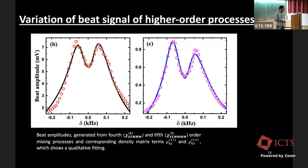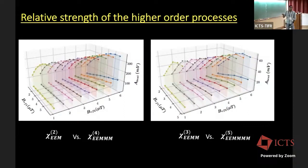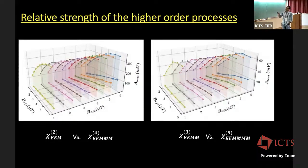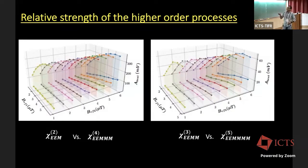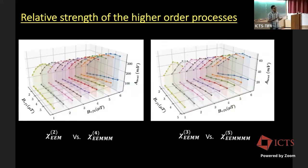The important thing we looked at was the relative strength of these processes. We varied the strength of BRF1 and BRF2 and compared chi-4 to chi-2. At about 5 microtesla in both fields, they become nearly the same order — about 300 versus 100, roughly three times less. But below about 1 microtesla, the higher-order process is much smaller — less than a percent. Similar behavior was observed for chi-3 and chi-5. This let us demonstrate a spectrum analyzer for the RF magnetic field.